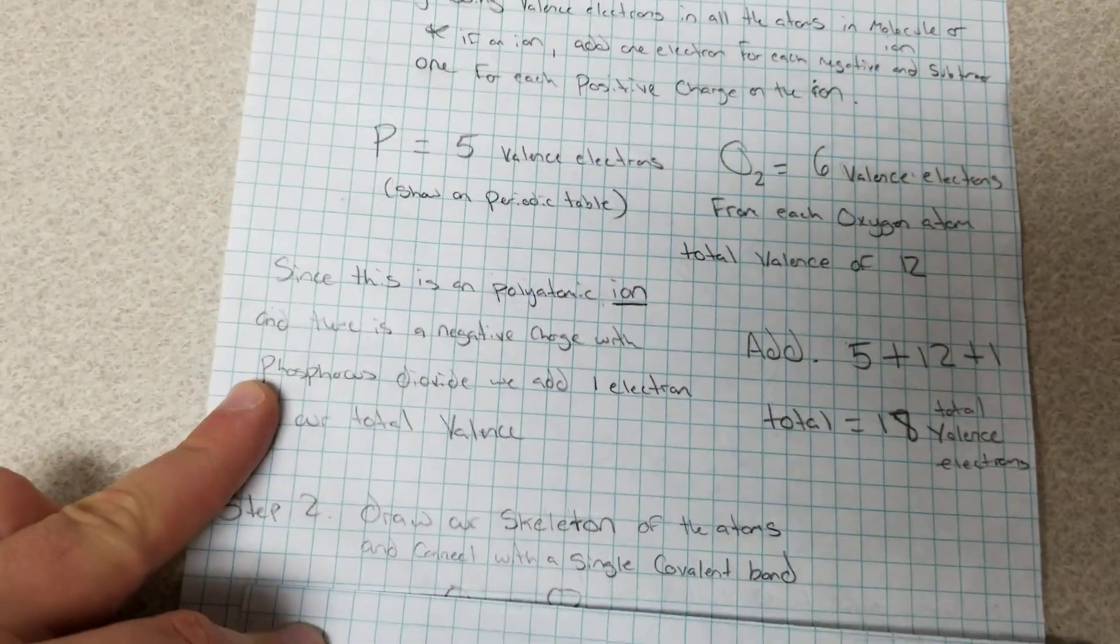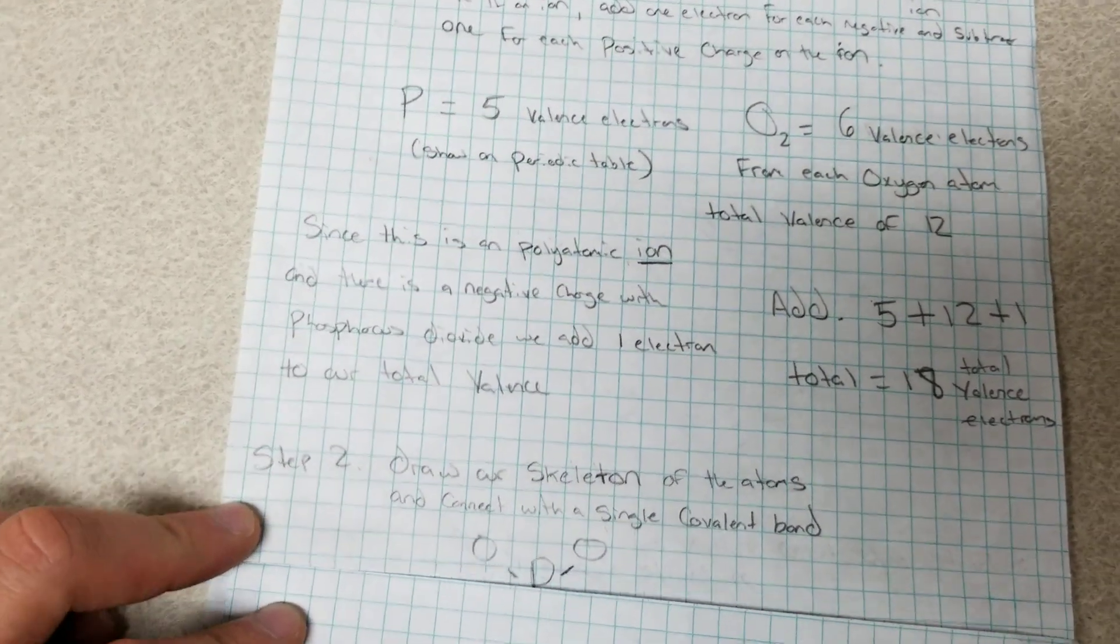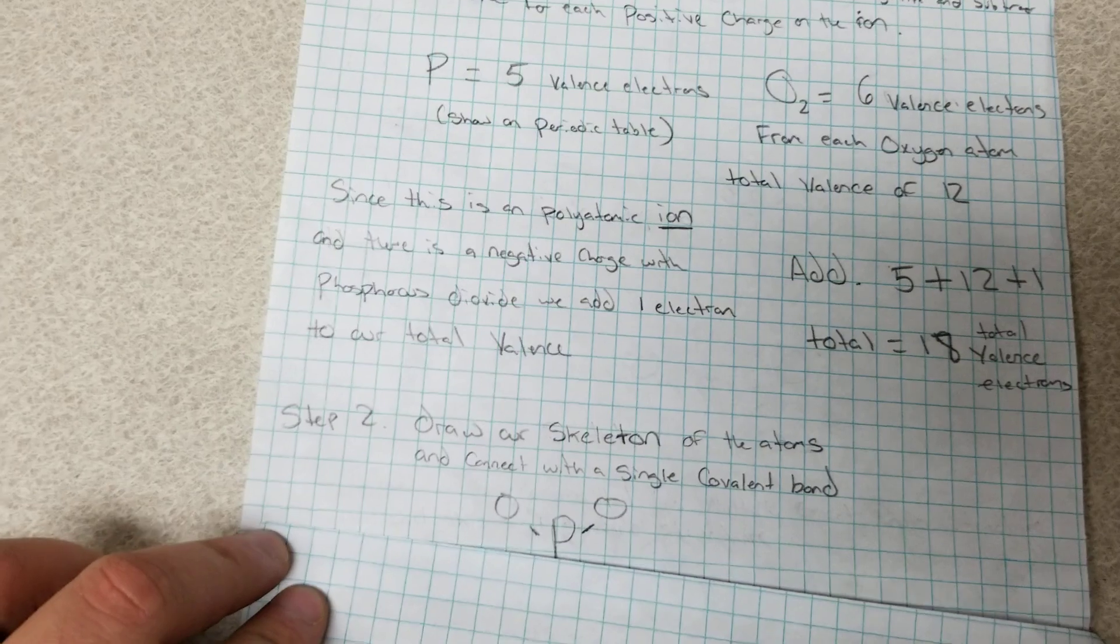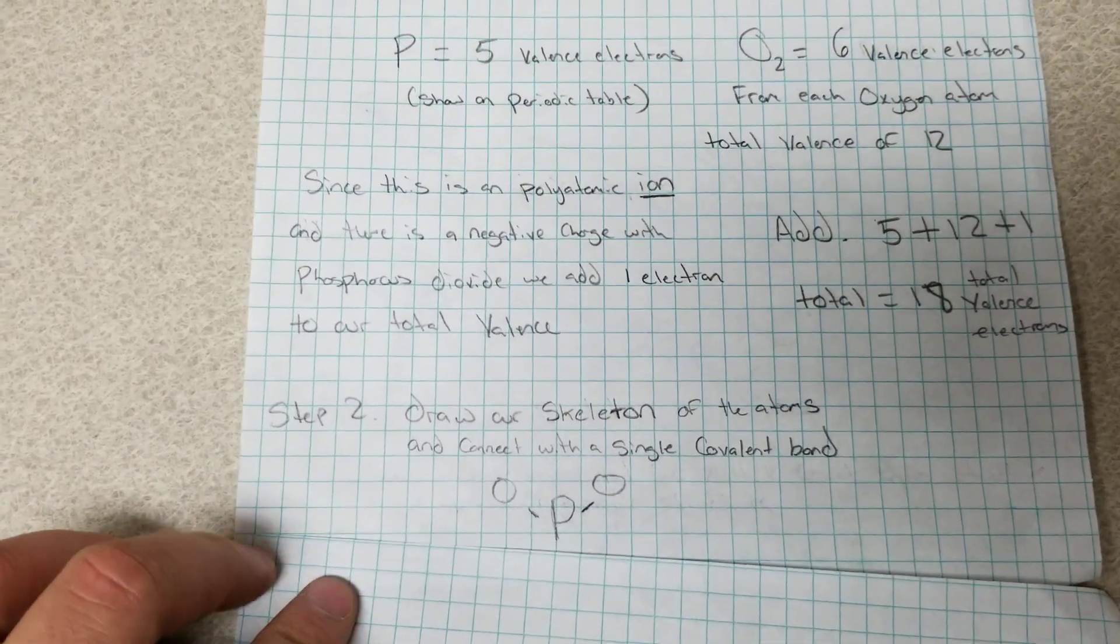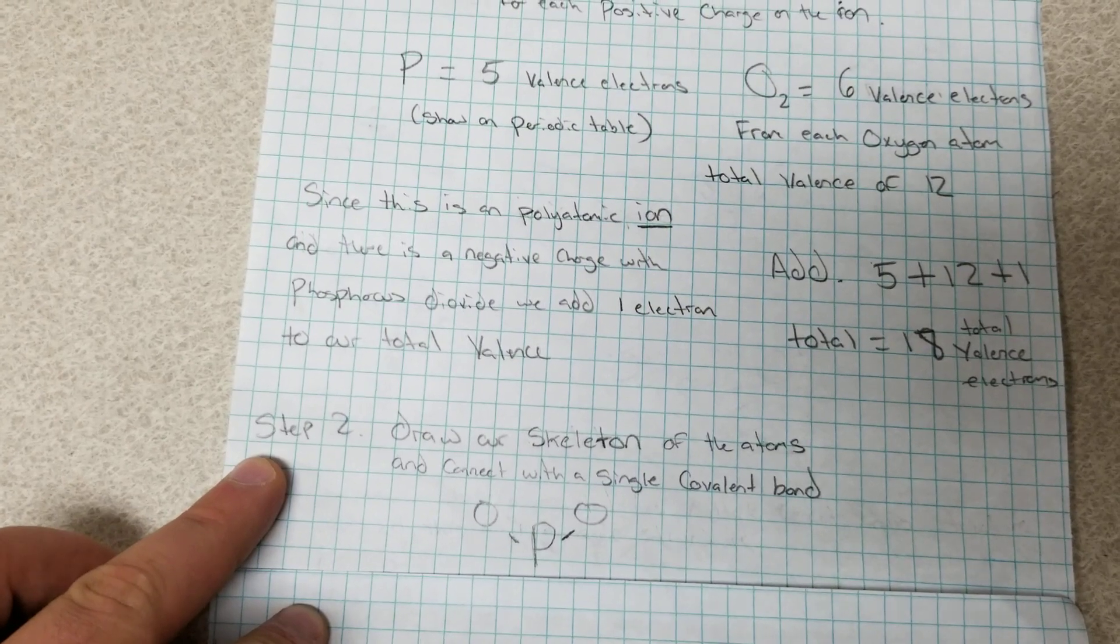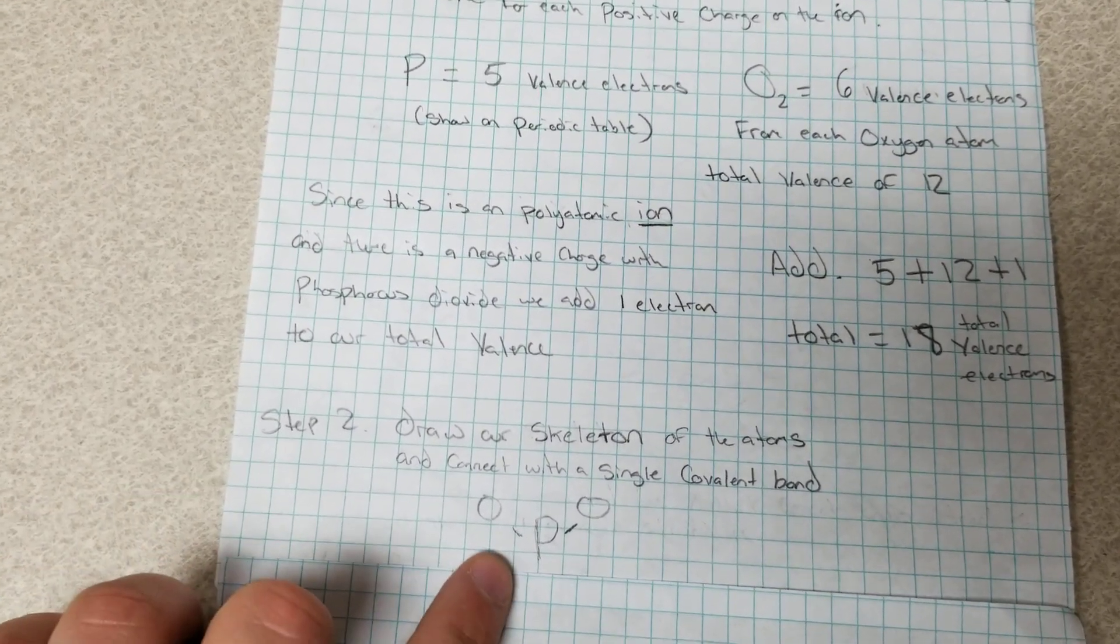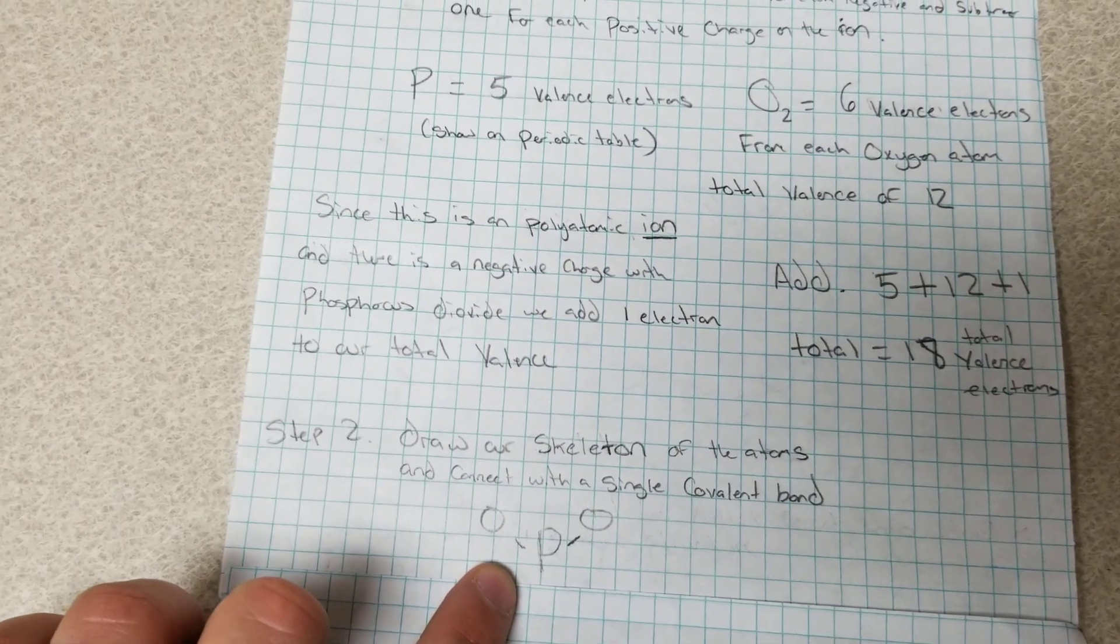Step two is we're going to draw our skeleton of the atoms and connect with a single covalent bond. So I have our skeleton structure here, we have a phosphorus atom with our two oxygen atoms connected by a single covalent bond.